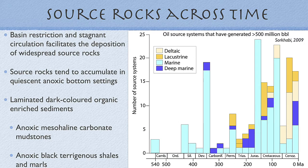If we look at the depositional associations within those accumulations — here we're looking at oil source systems that have generated more than half a billion barrels of oil — we can see that marine settings dominate the majority of the world's source rock depositional settings across the Phanerozoic. There are also some deep marine anoxic settings as well as lacustrine and deltaic settings. We're going to focus on the marine association in mesohaline settings, but this is not the only setting in which hydrocarbons can be generated. However, the mesohaline anoxic bottom setting does dominate much of the source rock systems in the Middle East and other evaporite-associated systems.